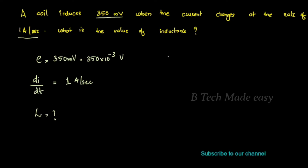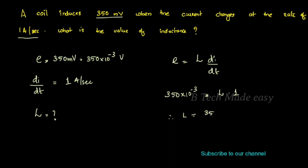The induced EMF formula is: E = L × (di/dt). Substituting, 350 × 10⁻³ = L × 1.